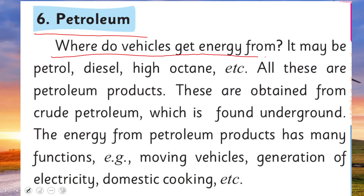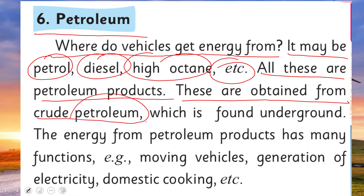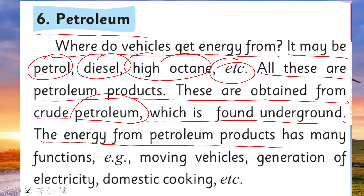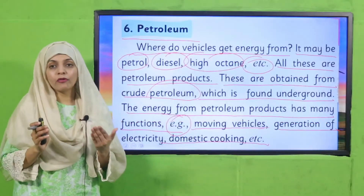Now let's read about petroleum. Where do vehicles get energy from? It may be petrol, diesel, high octane, etc. All these are petroleum products. These are obtained from crude petroleum which is found underground. The energy from petroleum products has many functions, for example moving vehicles, generation of electricity, domestic cooking, and more.